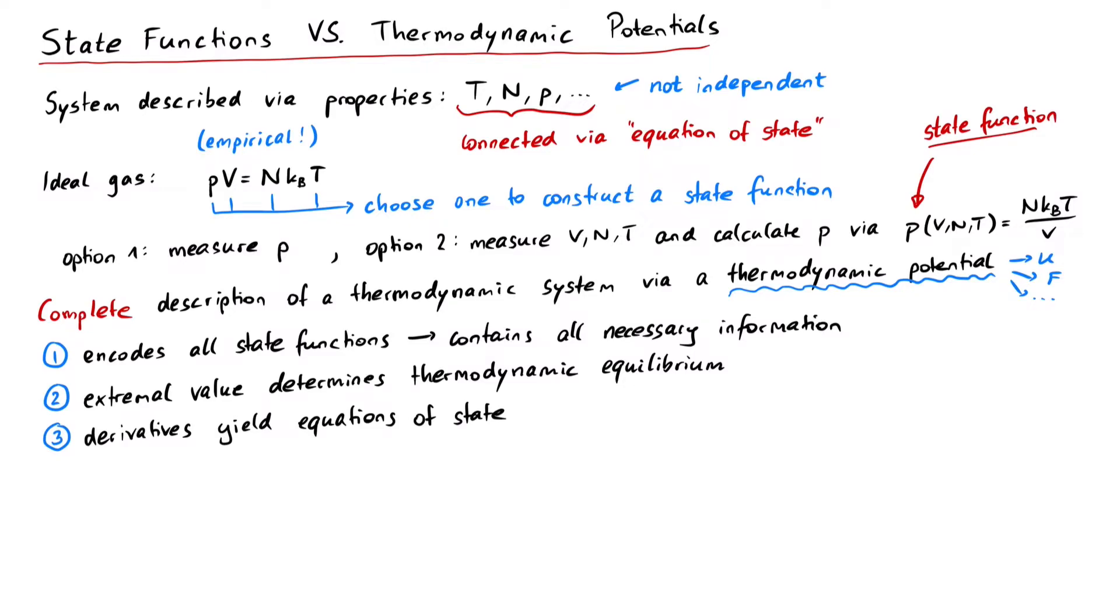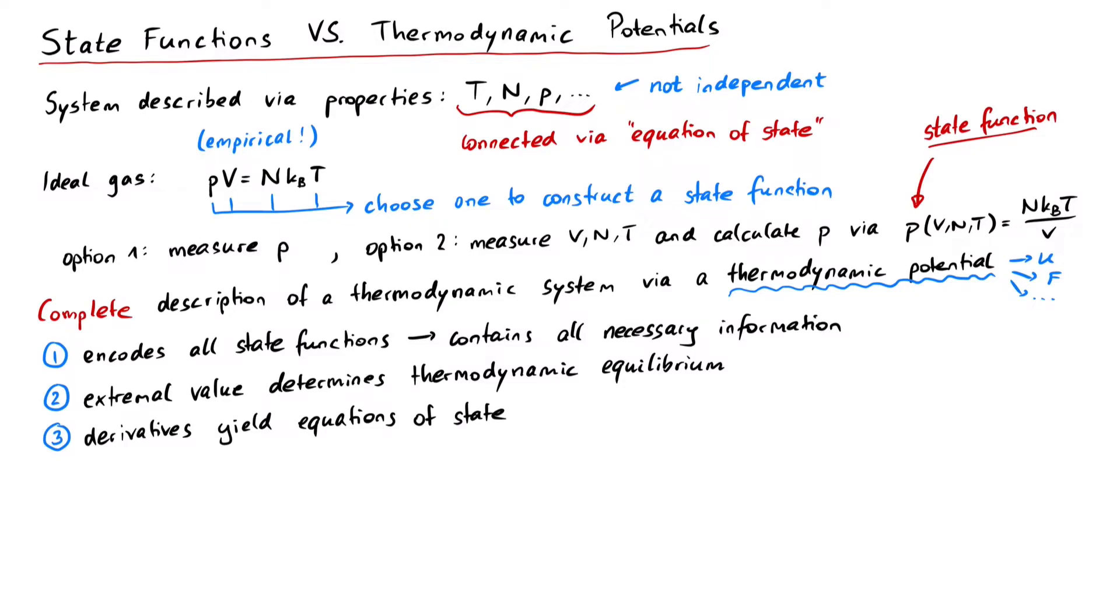Let's do an example so you can see all the things we mentioned so far in action. To keep things simple, we stay with the ideal gas. Our relevant properties to describe an ideal gas are pressure, volume, number of particles, temperature, entropy, internal energy, and so on. For our example calculation, let's say we want to find the thermodynamic potential of the ideal gas, the internal energy U. The natural variables of U are entropy, volume, and particle number. And to keep things really simple, let's assume a closed system, so that the number of particles always stays constant, and we can ignore it.